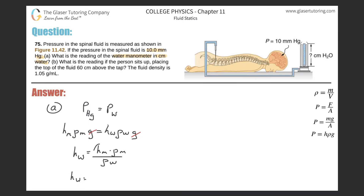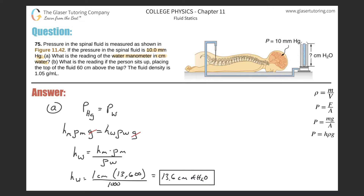The height of water equals the height of mercury in centimeters — since 10 millimeters equals 1 centimeter — multiplied by the density of mercury (13,600 kg/m³), divided by the density of water (1,000 kg/m³). So it's 1 times 13,600 divided by 1,000, which equals 13.6 centimeters of water. That is the answer for letter A.